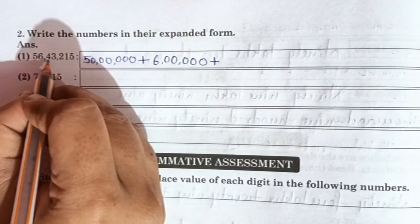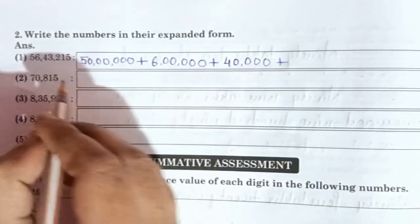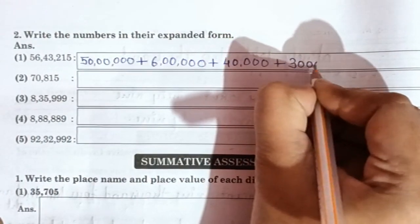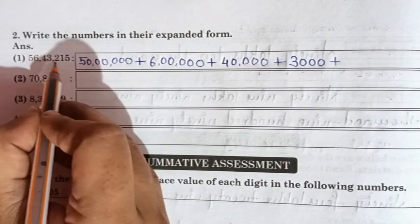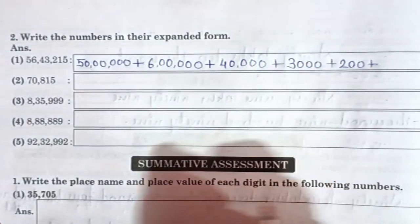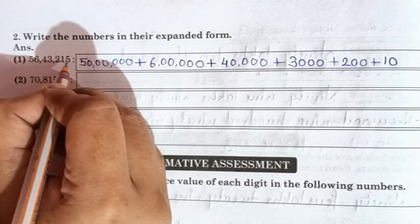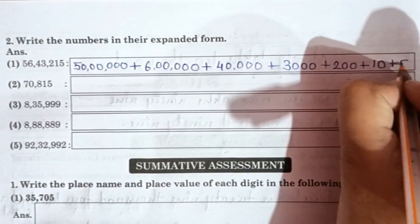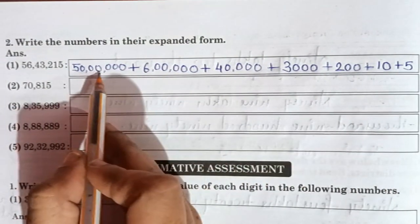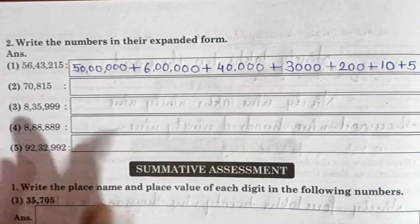Then 2 is at hundreds place: 200. Plus. 1 is at tens place: 10. Plus. 5 is at units place: 5. So in this way you have expanded the number 56,43,215 as 50,00,000 + 6,00,000 + 40,000 + 3,000 + 200 + 10 + 5.